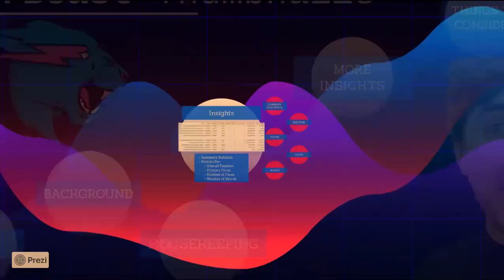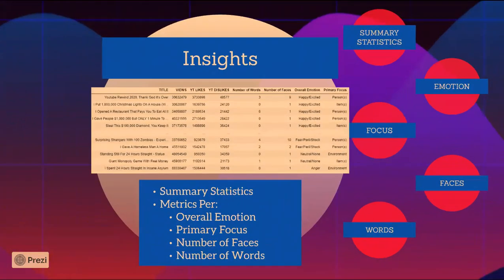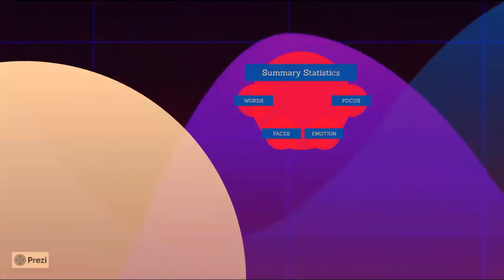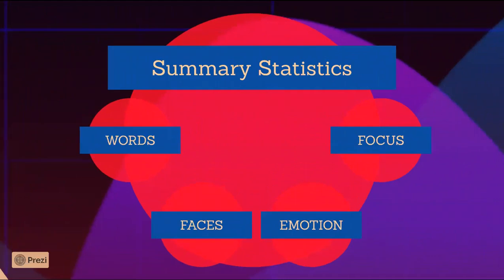The first step was reading in the two data files. The first file was the thumbnail data that Nate recorded. The second file was the views, likes, and dislikes for each video that I recorded. Then I merged these two data files. Next I plotted the counts of various metrics to get some summary statistics.